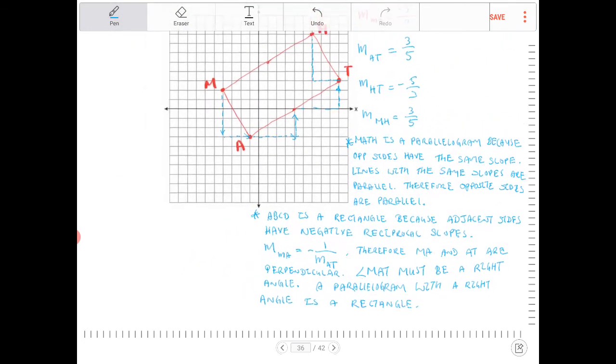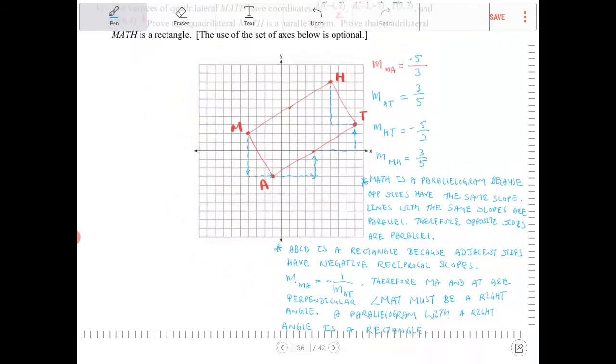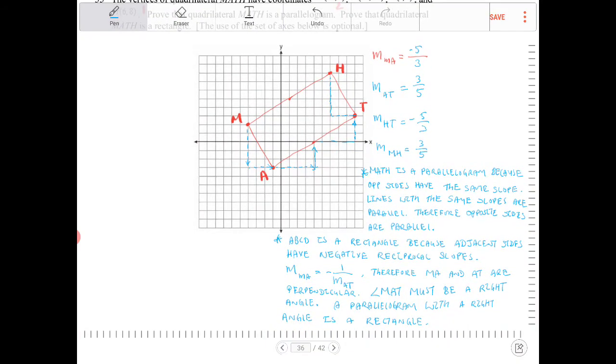So of course, this approach that I took here is not the only approach. You can certainly prove this in a myriad of different ways. You can prove rectangles or you can prove a quadrilateral to be a rectangle by, you know, working with the diagonals.